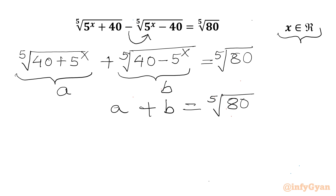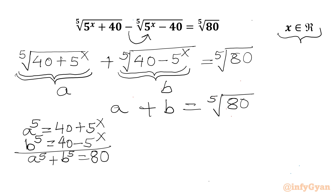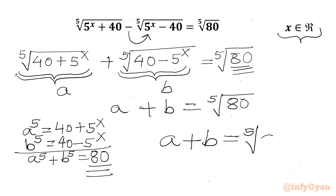The second equation comes from the substitution. If 5th root of (40 + 5^x) equals A, then A⁵ equals 40 plus 5^x. And if 5th root of (40 minus 5^x) equals B, then B⁵ equals 40 minus 5^x. Adding both: A⁵ plus B⁵ equals 80. This 80 matches the radicand on the RHS, so we can write: A plus B equals 5th root of (A⁵ + B⁵).